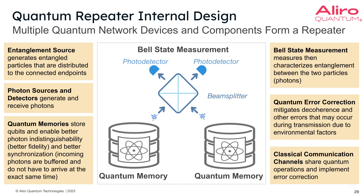And then of course there's classical communication that occurs within the repeater itself. This is where things like quantum operations are shared and exchanged. This is one of the ways that error correction is facilitated. So the classical communication channels are another aspect to these quantum repeaters.